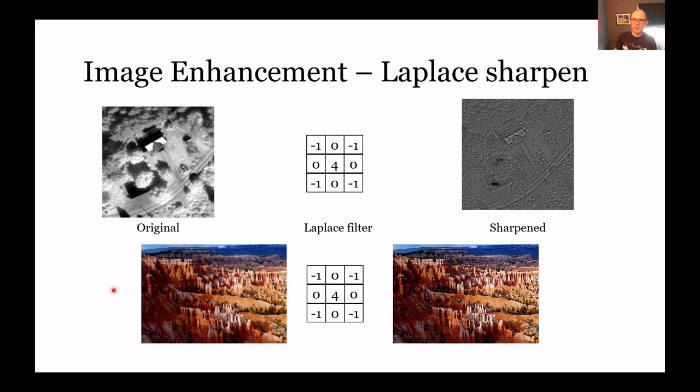Let's look at the sharpening high pass filter. Here's our original data and we run, in this case, a class filter over it and we get this sharpened image. We have another photograph down here, an oblique photograph, and we can do sharpening on that as well.